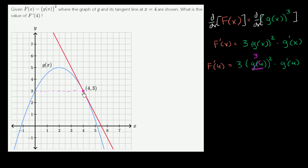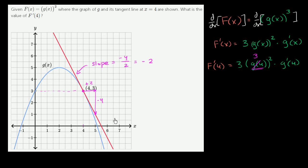And what's g prime of 4? When x equals 4, g prime of 4 is the slope of the tangent line that they've drawn. So what is the slope of this line? We just have to think about change in y over change in x, looking at two integer-valued coordinates. When we increase x by 2, we decrease y by 4. So slope is rise over run, change in y over change in x — negative 4 over 2 — which is equal to negative 2.